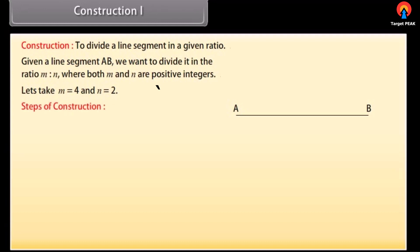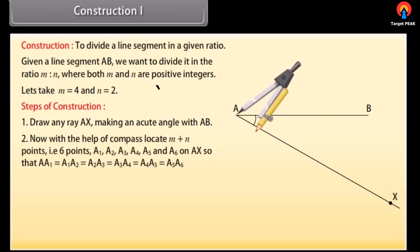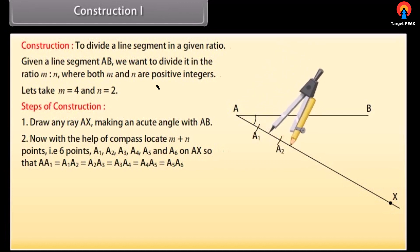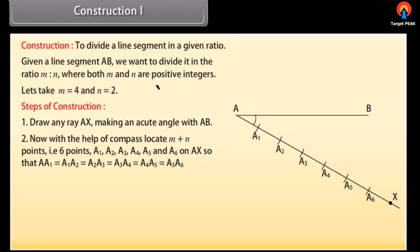Steps of Construction: Draw any ray AX making an acute angle with AB. Now with the help of a compass, locate M plus N points, that is 6 points A1, A2, A3, A4, A5, and A6 on AX, so that AA1 equals A1A2 equals A2A3 equals A3A4 equals A4A5 equals A5A6.